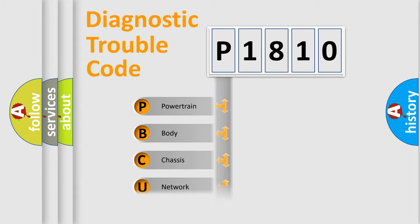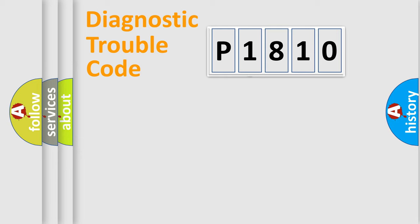Powertrain, Body, Chassis, Network. This distribution is defined in the first character code.